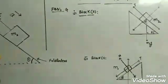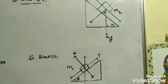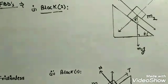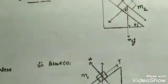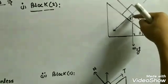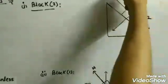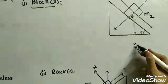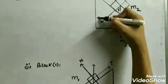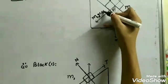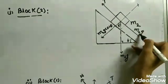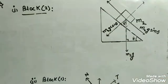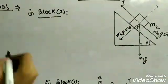We are first going to draw the free body diagram of the second block resting on the plane with angle theta. This angle is theta and this is the block with mass m2. The two forces acting on this block are m2g, its weight, and the tension acting upwards along the plane. As done in the previous video, we are going to resolve this weight into two components: m2g cos theta and m2g sin theta.